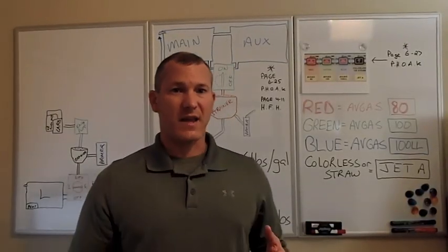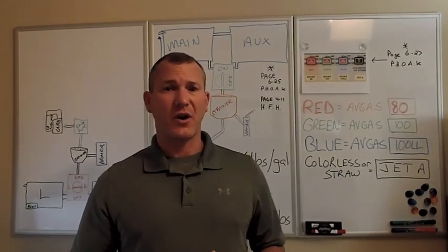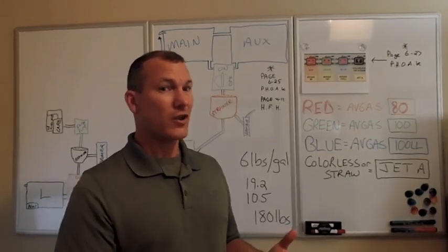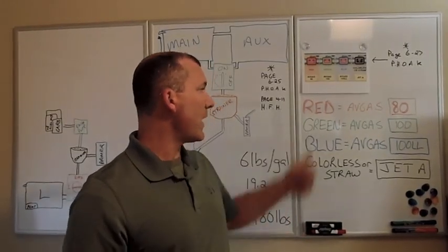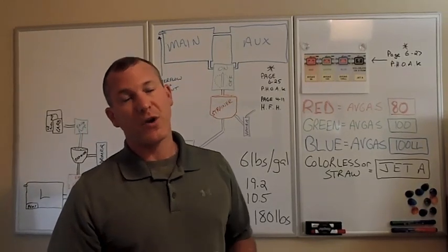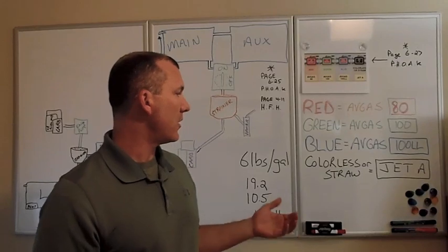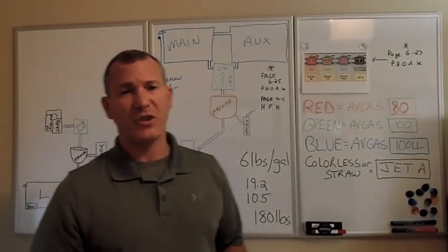One of the ways that regulation ensures that we don't put the wrong type of gas in our aircraft is they make the gas different colors. So for instance, red Avgas indicates Avgas 80, green for the 100, blue for the 100 low lead, and either colorless or straw colored for the jet fuels.